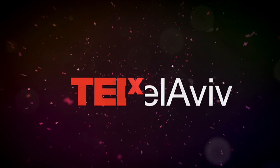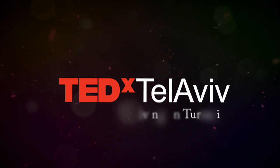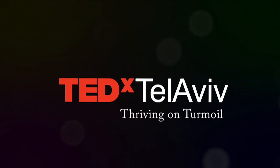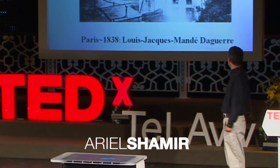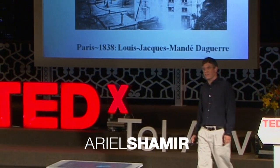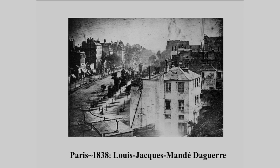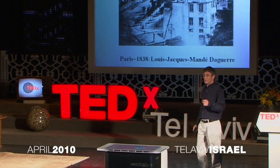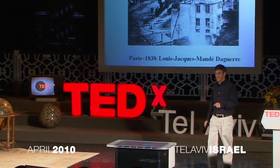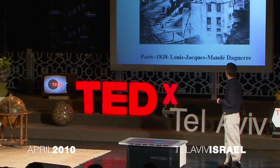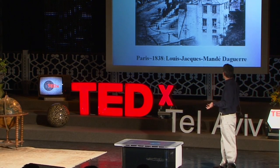I would like to start with this image taken in 1838 by Daguerre. This is one of the first photographs ever taken, and actually it's also the first photograph of humans. You are probably wondering what is this guy talking about — where are the humans?